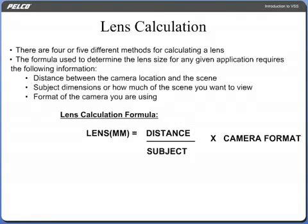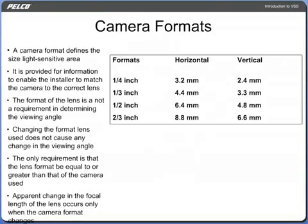There are four or five different methods for calculating a lens. The formula used to determine the lens size for any given application requires the following information: distance between the camera location and the scene, subject dimensions or how much of the scene you want to view, and the format of the camera you are using. A camera format defines the size of the light-sensitive area of the imaging device used in the camera, and is provided to enable the installer to match the camera to the correct lens.